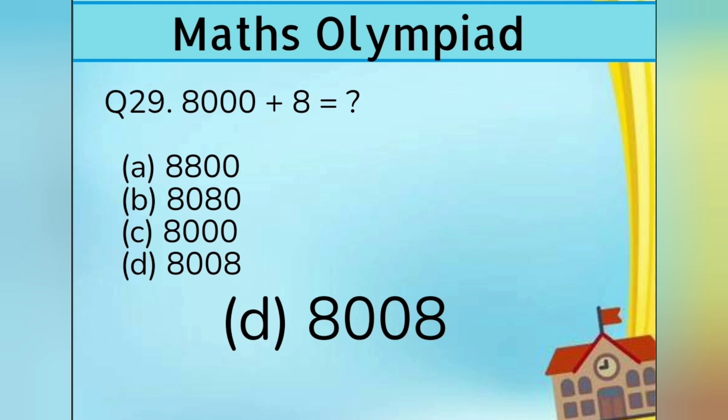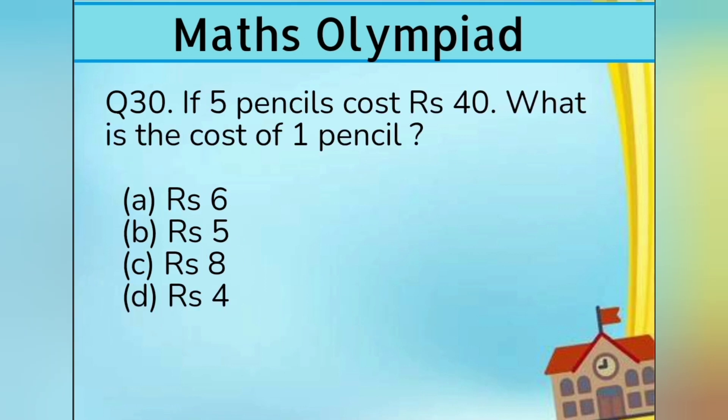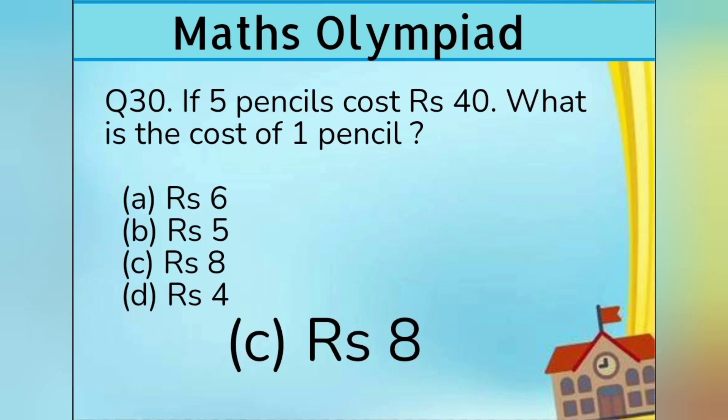Question number 30. If 5 pencils cost Rs. 40, what is the cost of 1 pencil? Option A Rs. 6, Option B Rs. 5, Option C Rs. 8, and Option D Rs. 4. Answer is Option C Rs. 8.